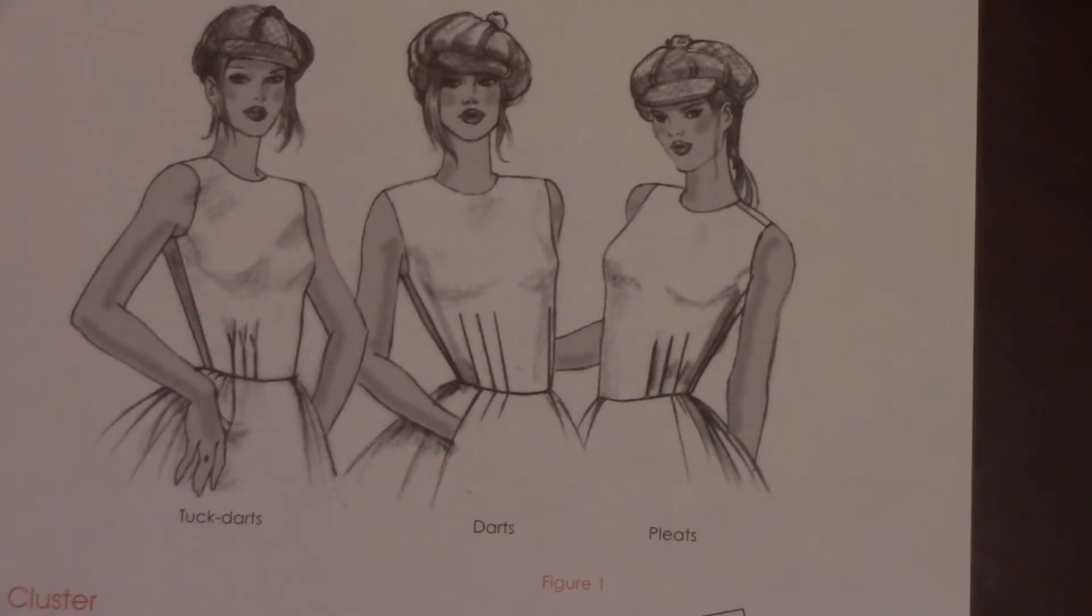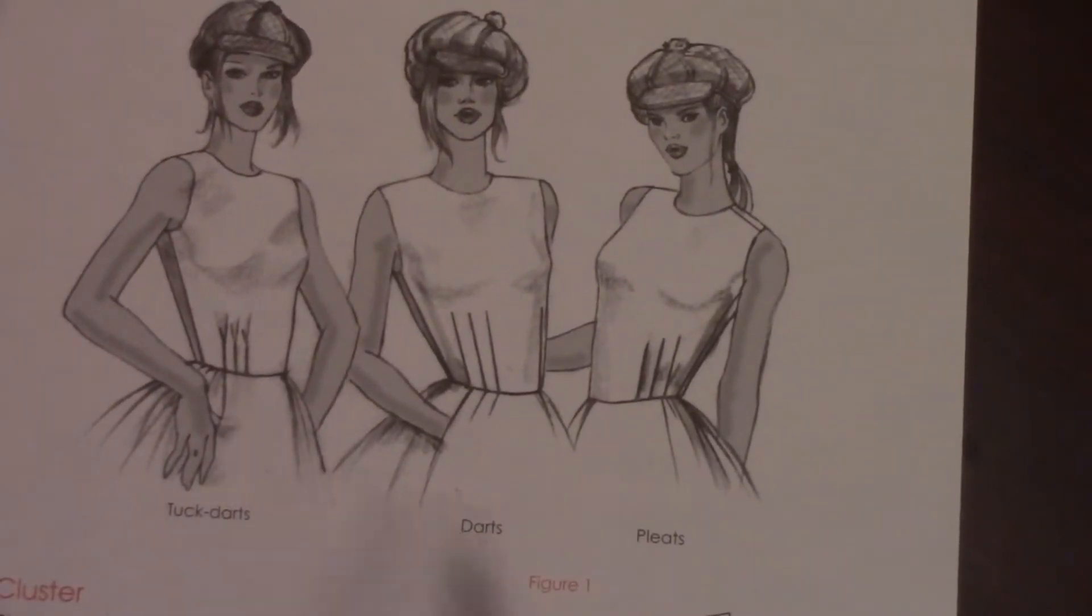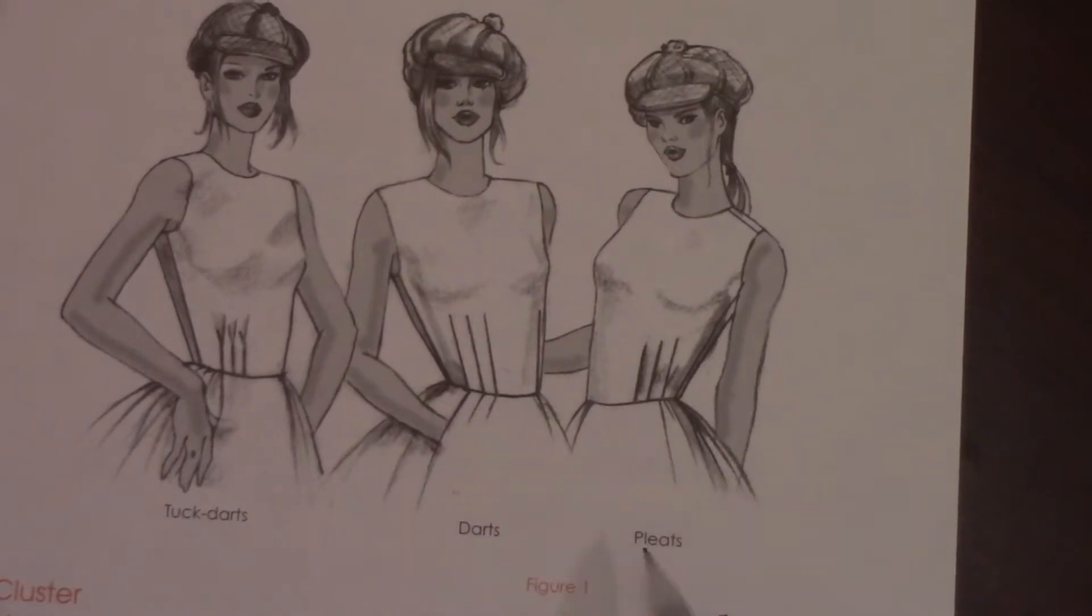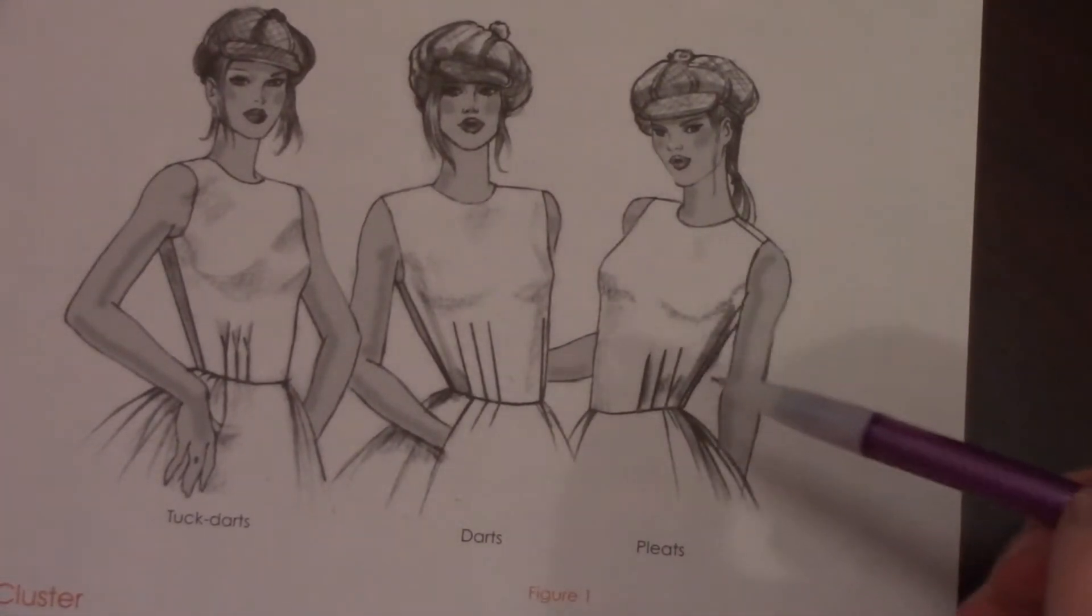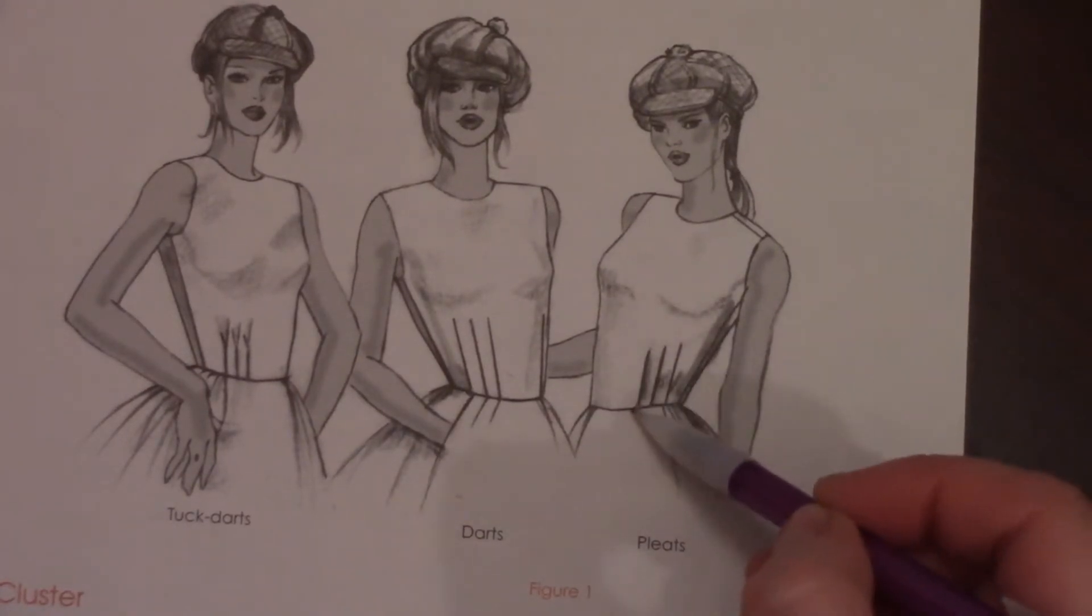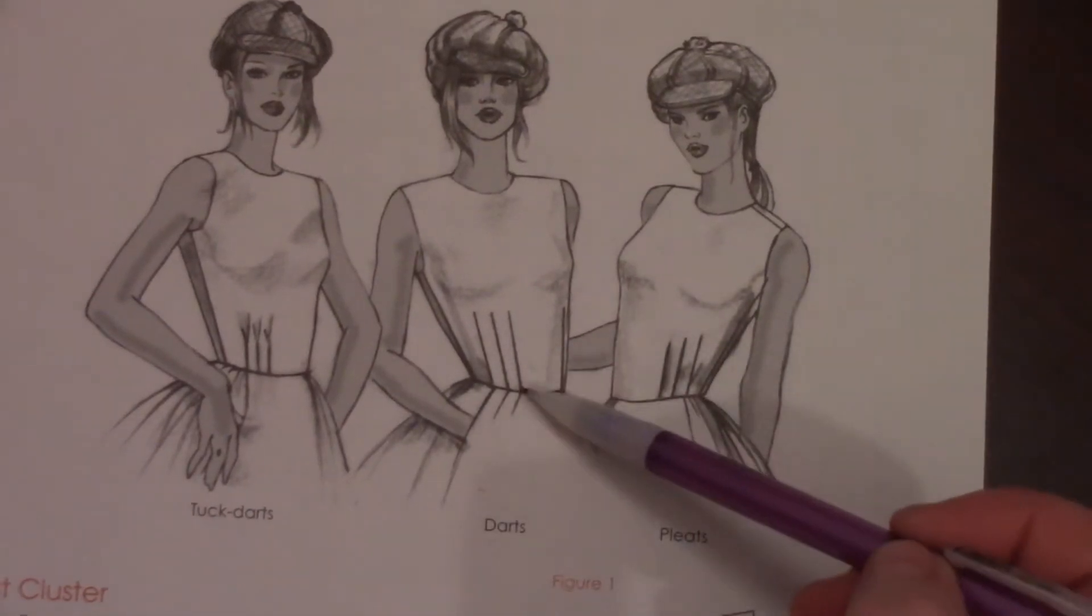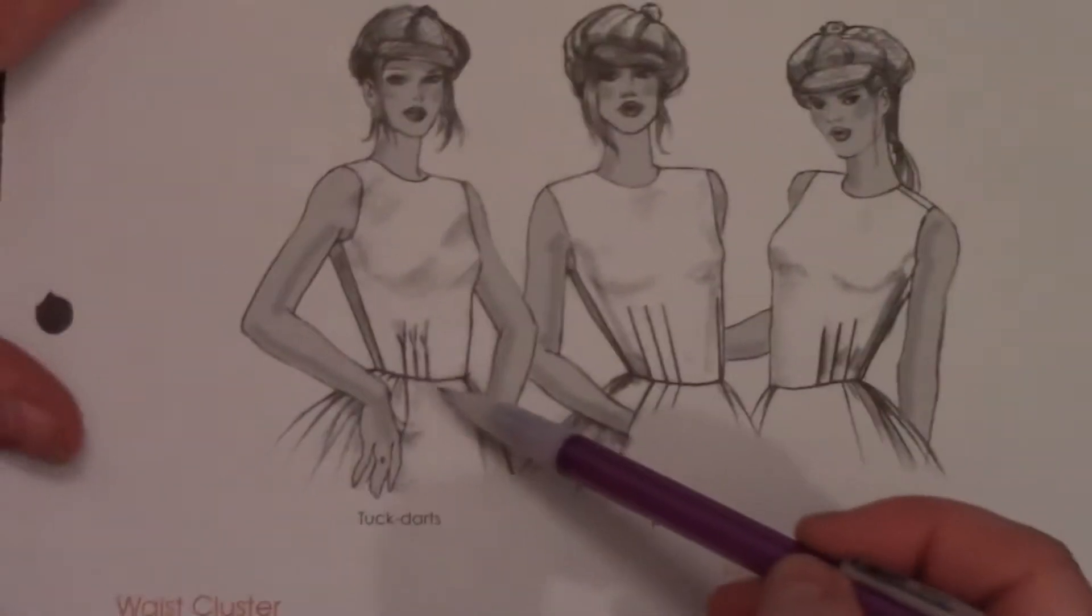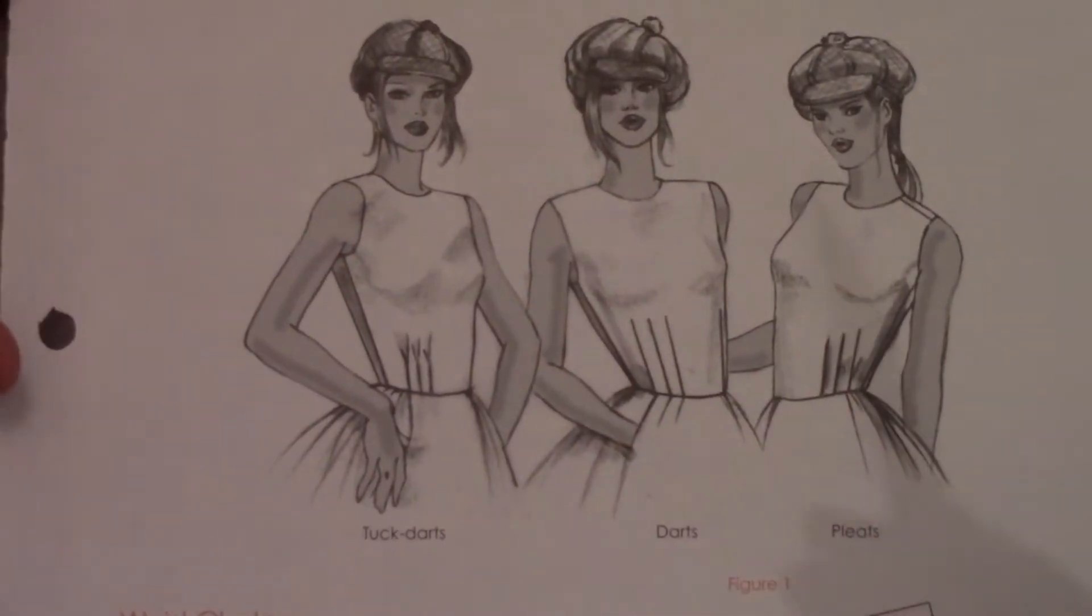These are darts that are used in a little bit more decorative way. We've got tuck darts, regular darts, and pleats. In this case they're only folded together and stitched on the end and right here just opens up. These are sewn closed like a dart and these are sewn part way up and then released before they get to the end.